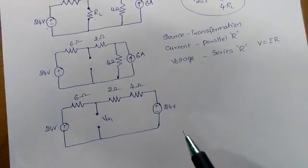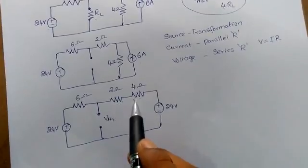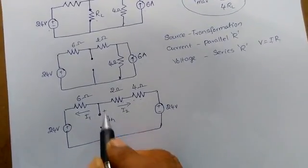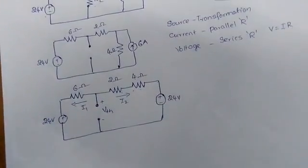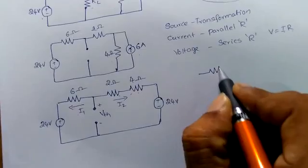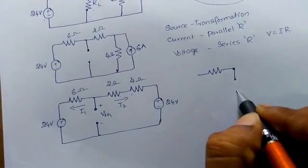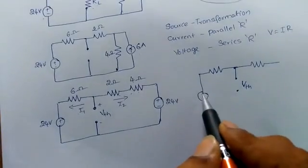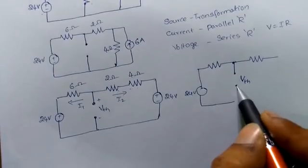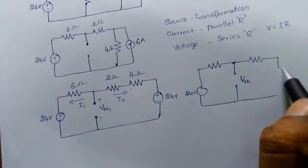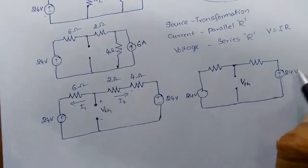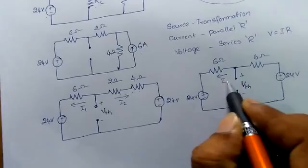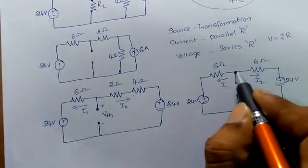In this circuit, we can combine the two series resistances and write current equations. We take the currents as I1 and I2. Now I can reduce the circuit: there is 6 ohms, V Thevenin, and again 6 ohms on the other side, with 24 volts and another 24 volts. Now you can take the sources I1 and I2 at a node — it is called a node.